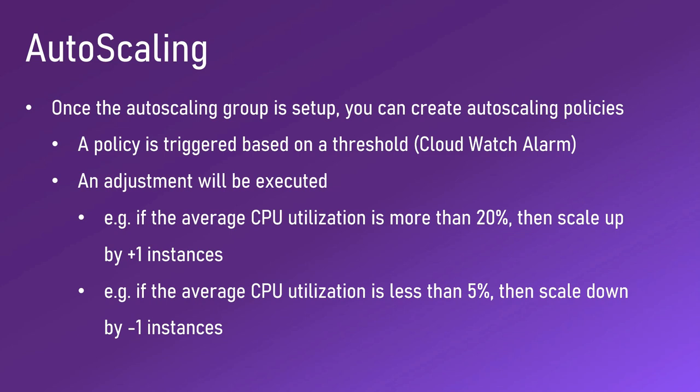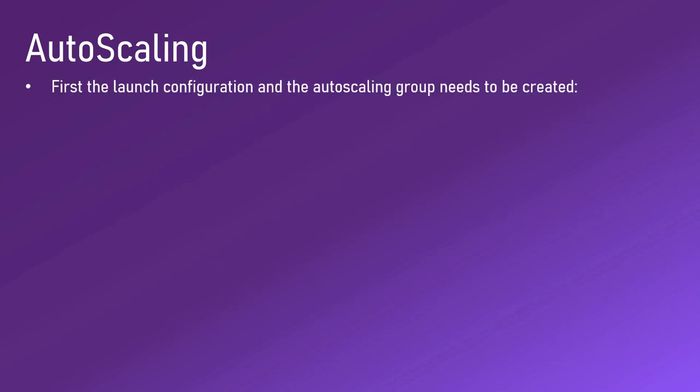Another example: if the average CPU utilization is less than five percent, this will trigger another CloudWatch alarm, then scale down by minus one instance. The plus one and minus one is the policy, and the CPU utilization threshold is the CloudWatch alarm.